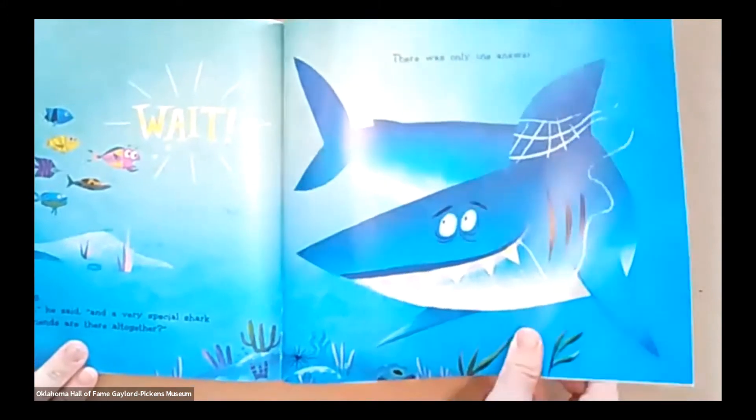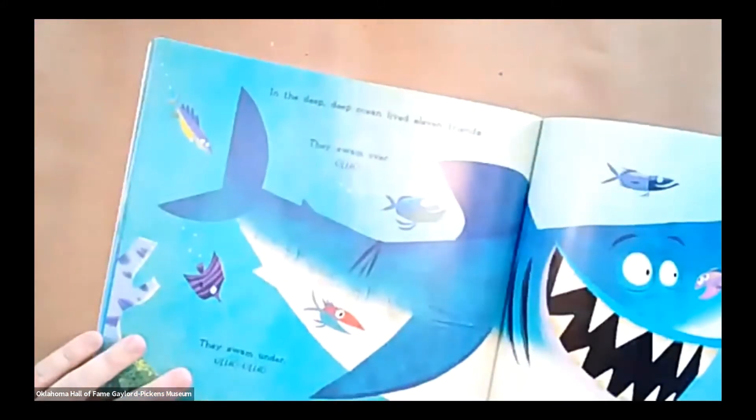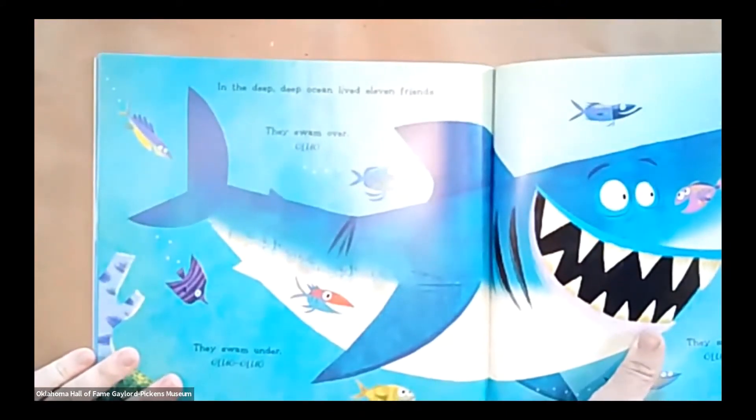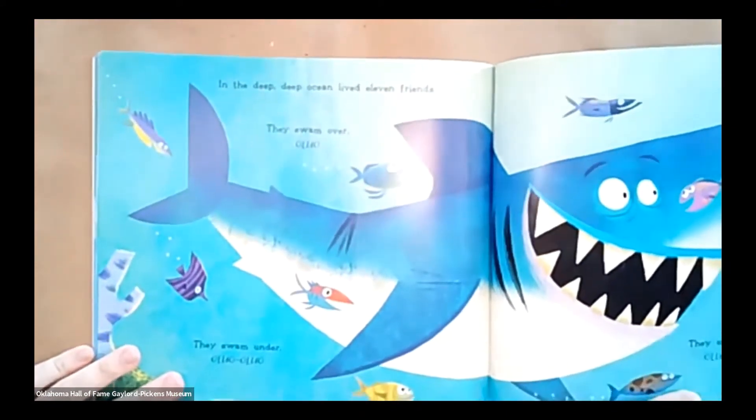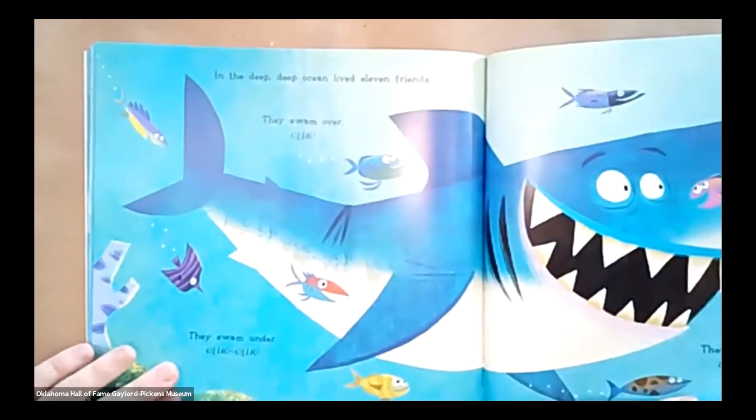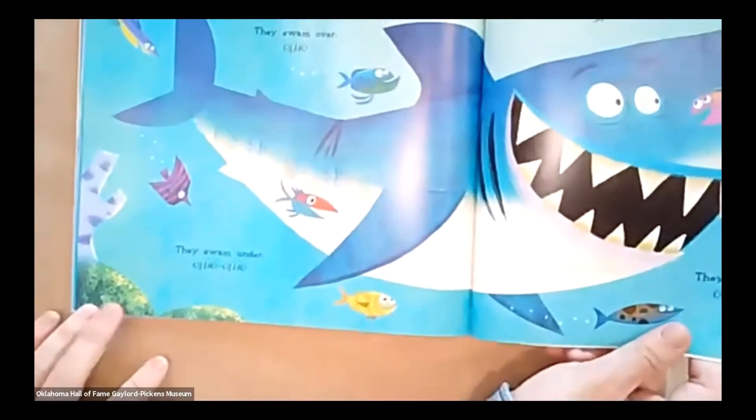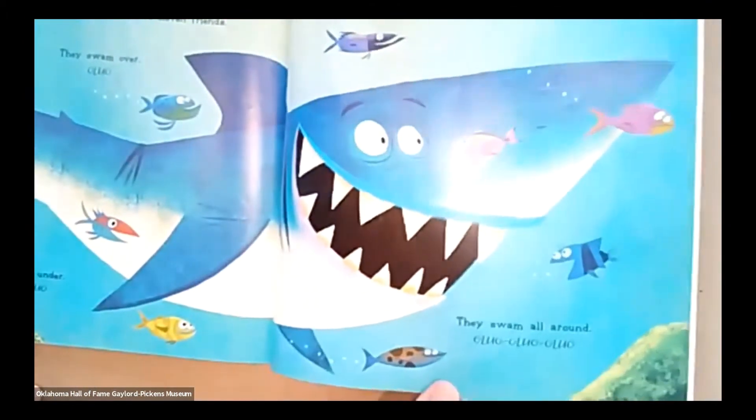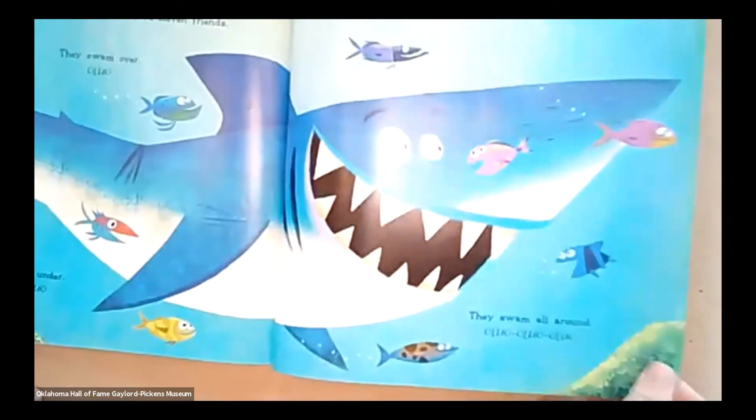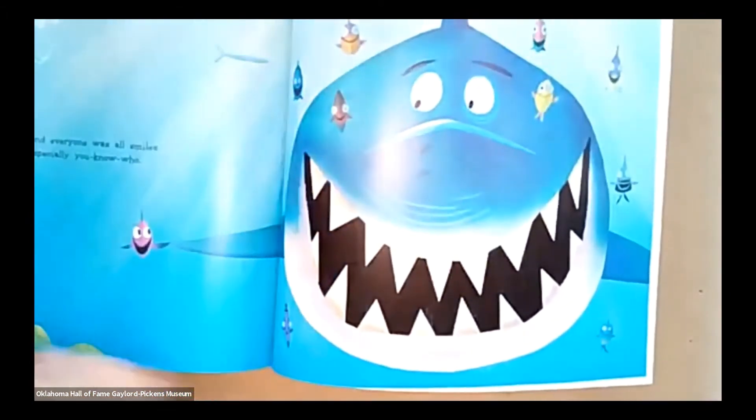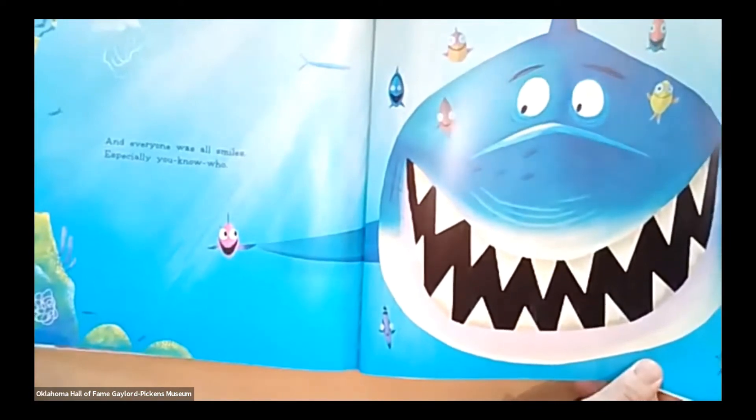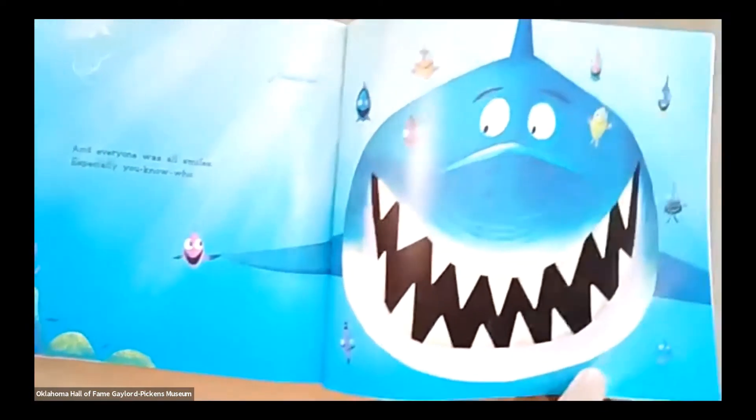There was only one answer. In the deep, deep ocean lived eleven friends. They swam over, glug. They swam under. Glug, glug. They swam all around. Glug, glug, glug. And everyone was all smiles, especially you-know-who.